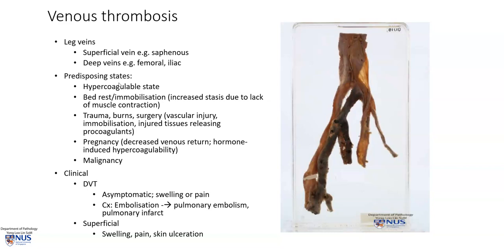There are some very important predisposing states to venous thrombosis. They include hypercoagulability, bed rest or immobilization — often due to lack of muscle contraction or pumping in the muscles of the lower limbs, therefore reducing venous return and increasing stasis. Trauma, burns, or surgery can also give rise to venous thrombosis, whether due to immobilization or injury to the vessels, and injured tissues also tend to release procoagulants. Pregnancy is also another risk factor because of decreased venous return and hormone-induced hypercoagulability, and malignancy can also give rise to a state of relative hypercoagulability.